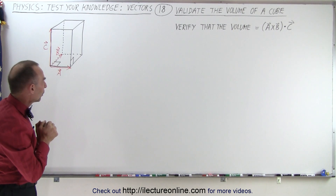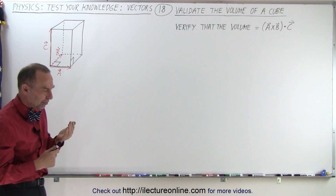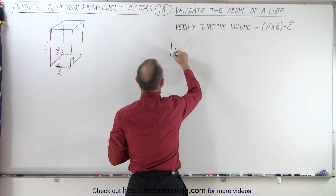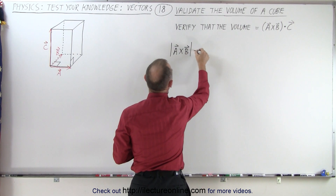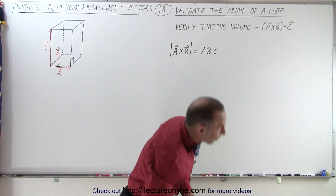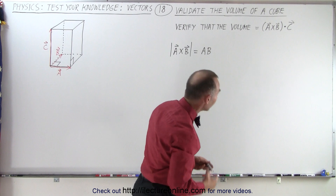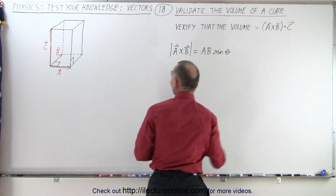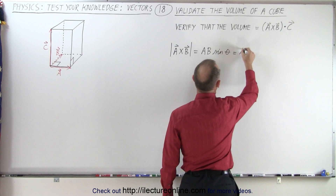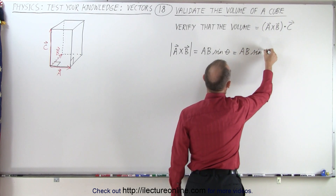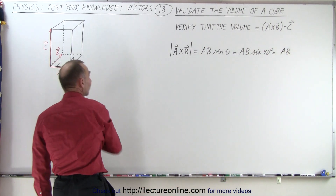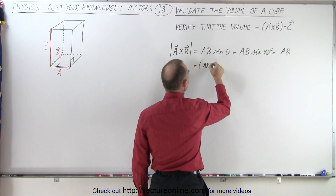So how do we do that? Let's start out by doing the cross product of a and b — but instead of just doing the cross product, let's find the magnitude of the cross product. The magnitude of a cross b by definition is equal to the magnitude of a times the magnitude of b times the sine of the angle between a and b, the sine of theta. By definition, since this is a cube, that angle should be 90 degrees. So this equals the magnitude of a times the magnitude of b times sine of 90 degrees, which equals the magnitude of a times the magnitude of b — which is equal to the area of the base. So this is by definition the area of the base of the cube.